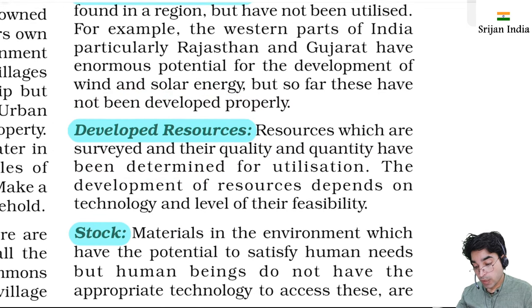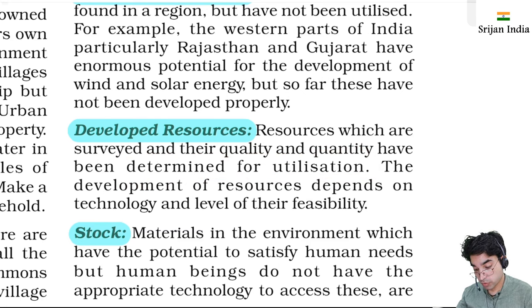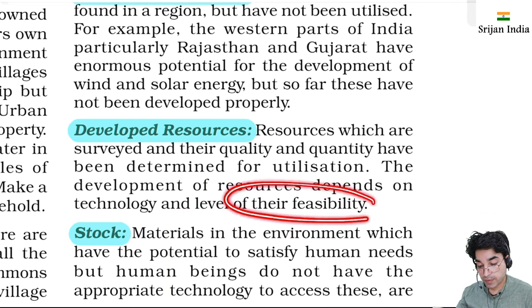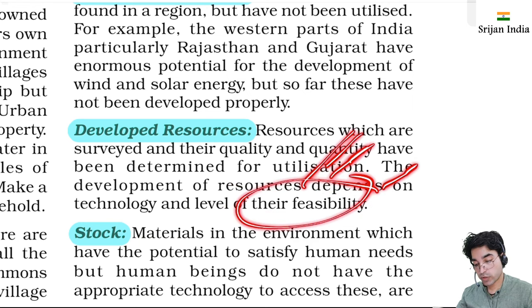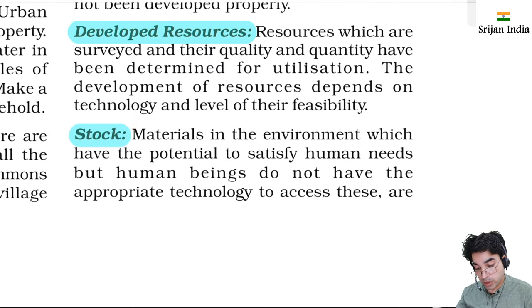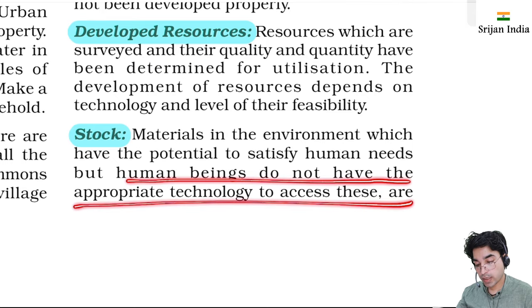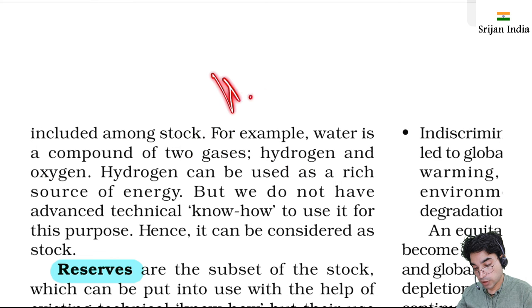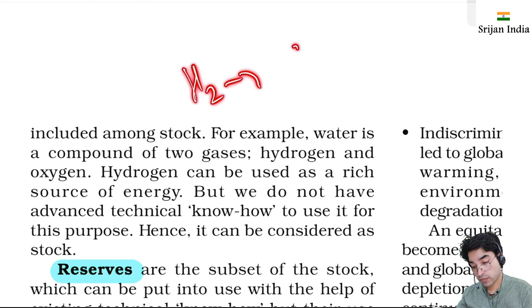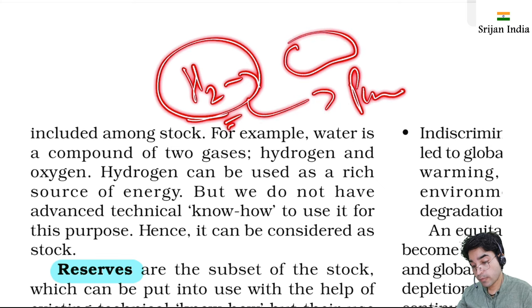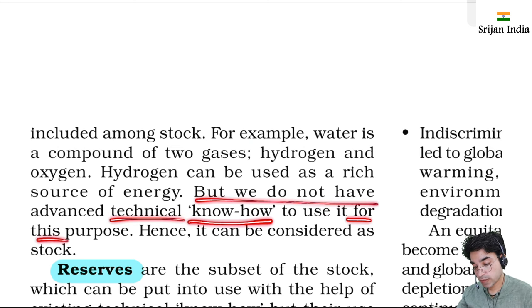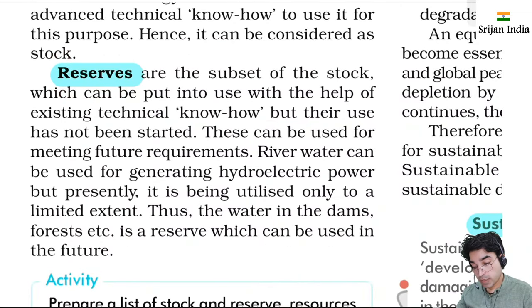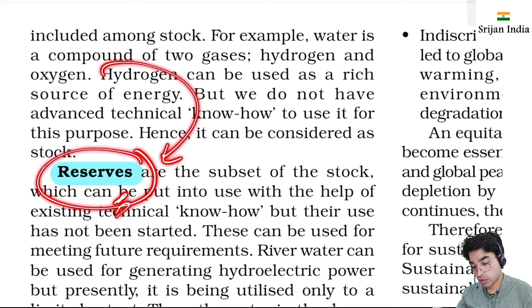Developed resources have been surveyed - their quality and quantity are known and they are determined for utilization. Development of resources depends on technology and level of feasibility. Stock refers to materials in the environment that have the potential to satisfy human needs but for which we lack the appropriate technology - for example, hydrogen from water (H2O) can be a rich source of energy, but we do not have advanced technical know-how to use it. Reserves are a subset of stock which can be put to use with existing know-how.